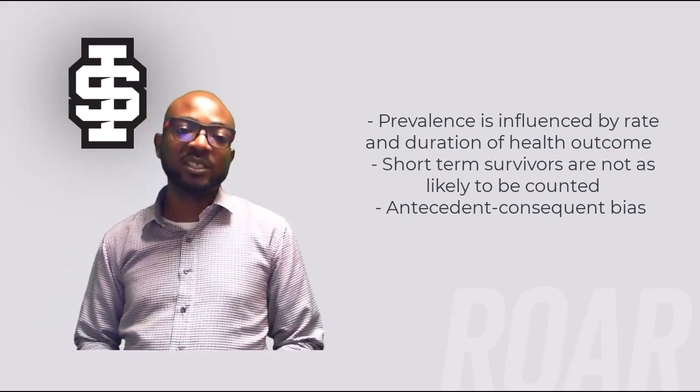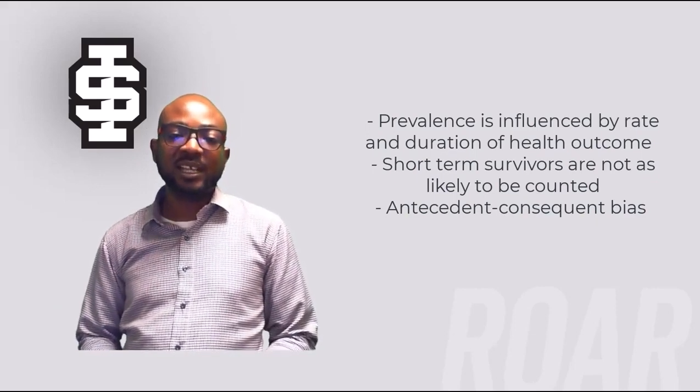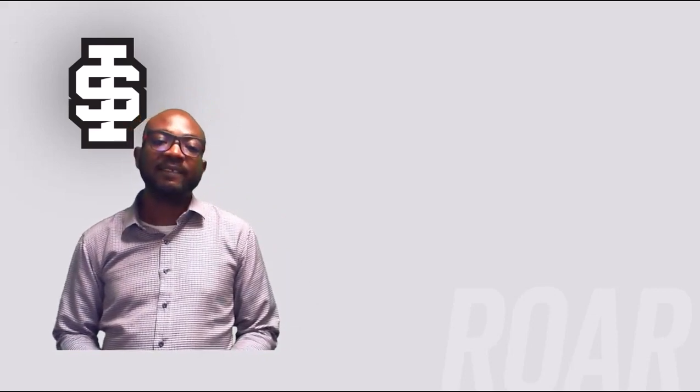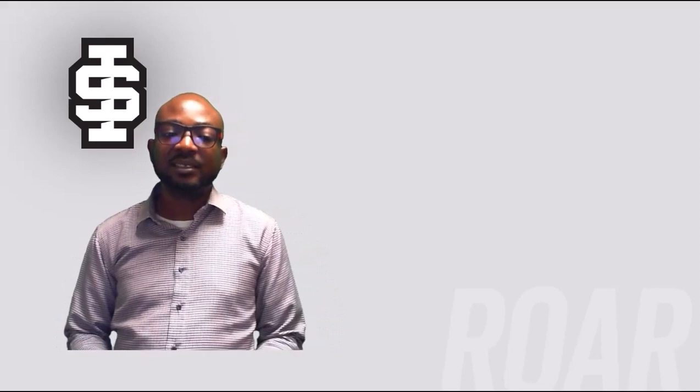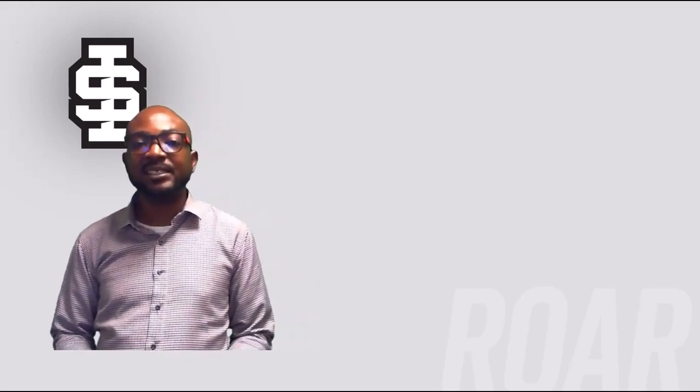Sometimes there are issues with interpreting cross-sectional studies. Antecedent-consequence bias affects cross-sectional and case-control studies but not cohort studies. In cohort studies, persons are selected because they are exposed or not exposed while still at risk and disease-free. In a cohort study investigating diets and arthritis, we obtain data on diets at baseline before any study subjects have evidence of arthritis. In a cross-sectional study, we ascertain dietary patterns at the same time as we obtain data on the presence or absence of arthritis. Thus, we cannot be sure that the exposure preceded the disease, as they are both ascertained at the same time.